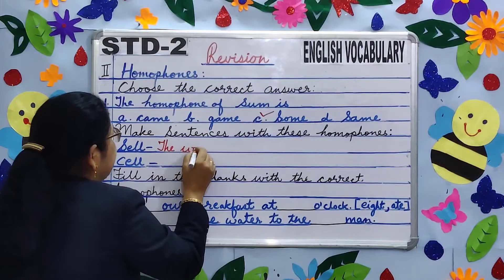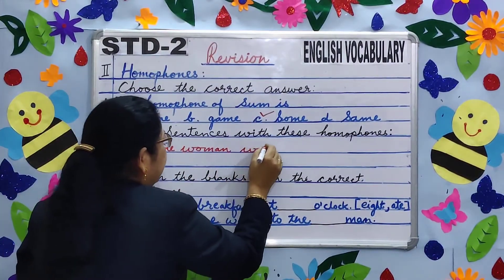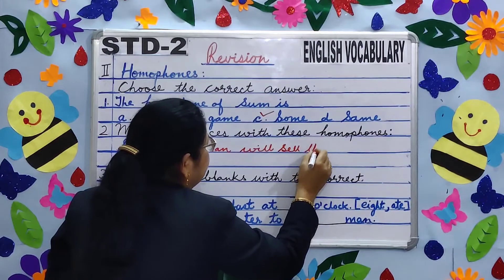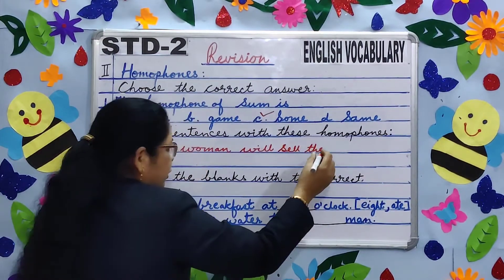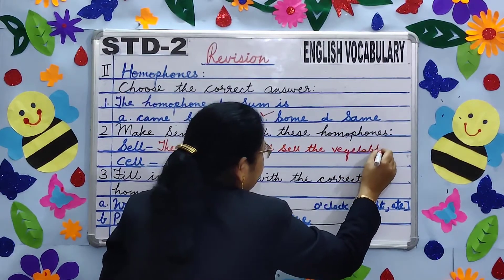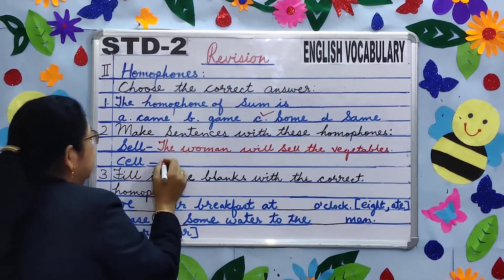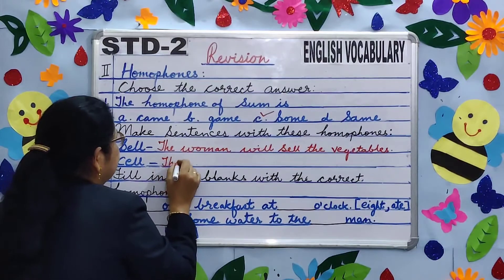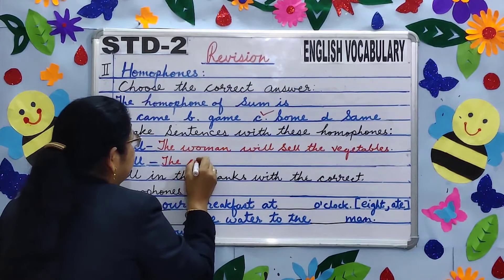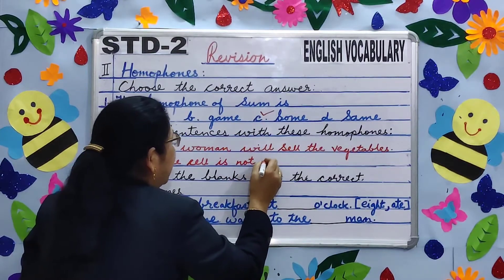Number two — make sentences with these homophones. 'Tell': The woman will tell. 'Sell': Sell the vegetables. 'Cell': The cell is not charged.